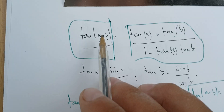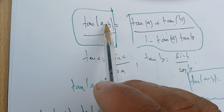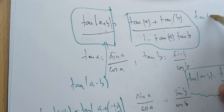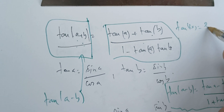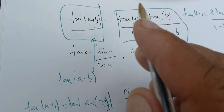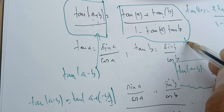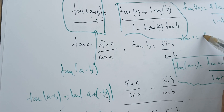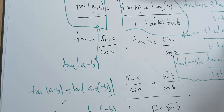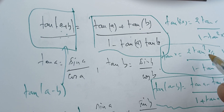A simple example: if a equals b equals x, then tangent of 2x equals 2 tangent of x over one minus tangent squared of x. If a equals b equals x over 2, then tangent of x equals 2 tangent of x over 2, all over one minus tangent squared of x over 2. This is very important to remember.